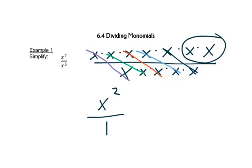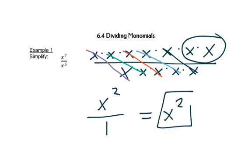It leaves a 1 on the bottom. Now if we divide by 1, it doesn't change anything — 5 divided by 1 is 5, 2 divided by 1 is 2. So x squared divided by 1 is x squared.